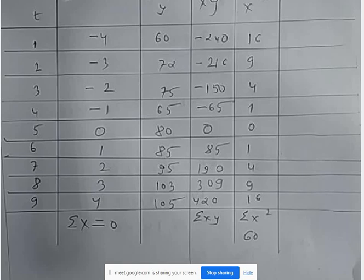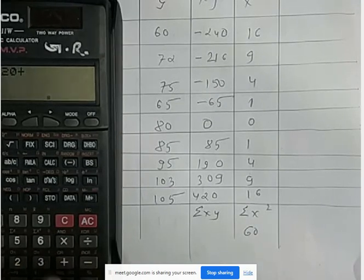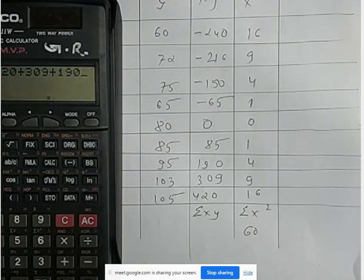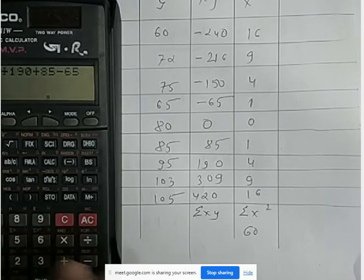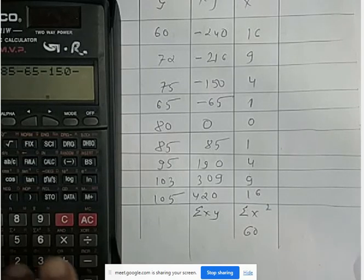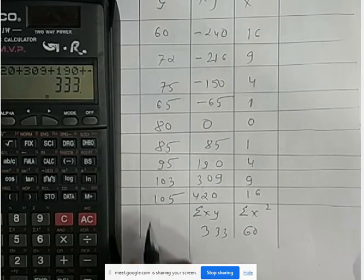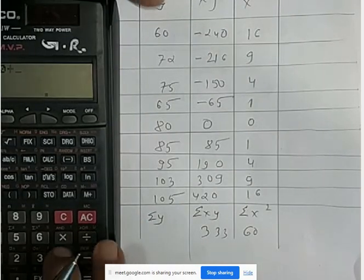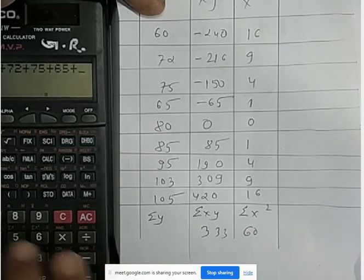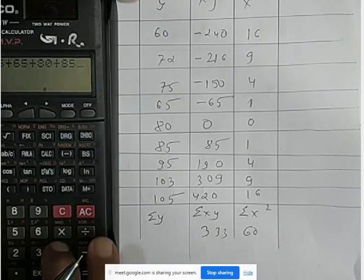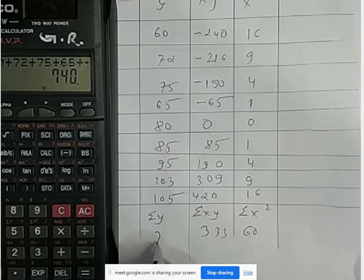We calculate summation XY. Then summation Y: 60 plus 72 plus 75 plus 65 plus 80 plus 85 plus 95 plus 103 plus 105 equals 740.